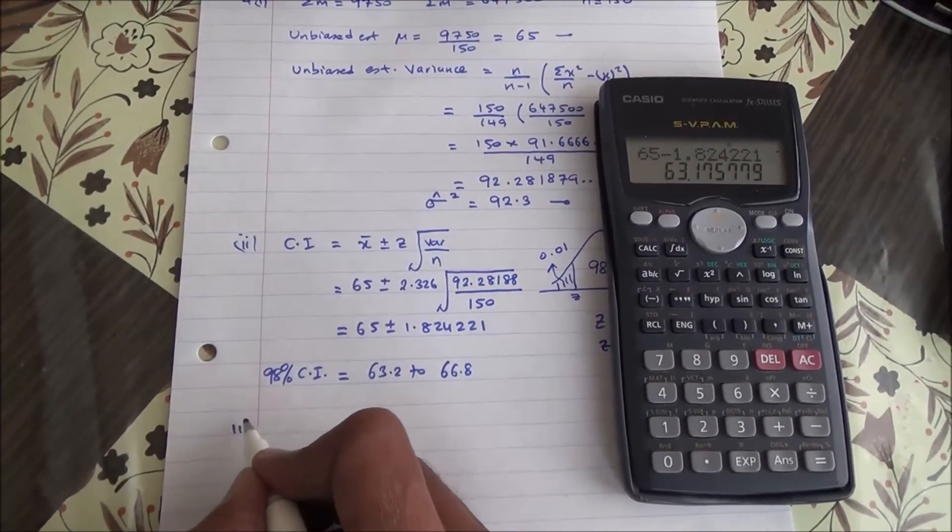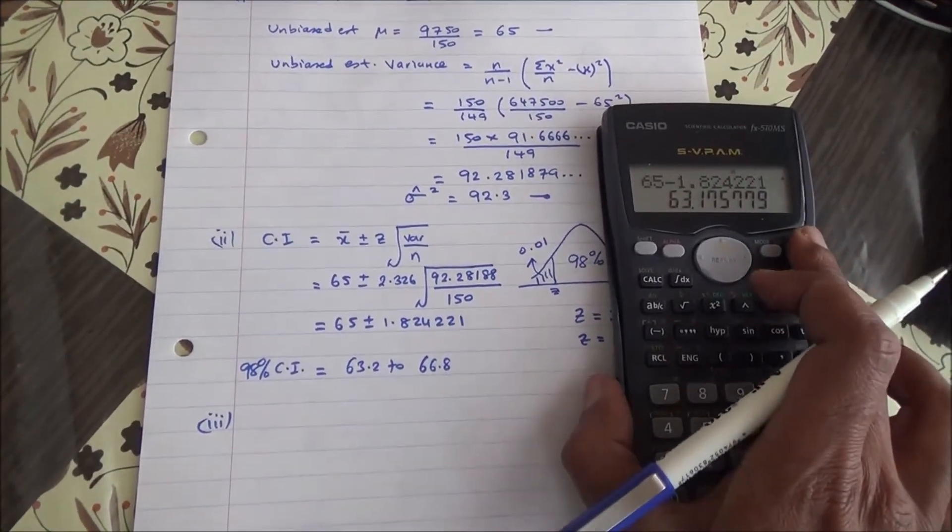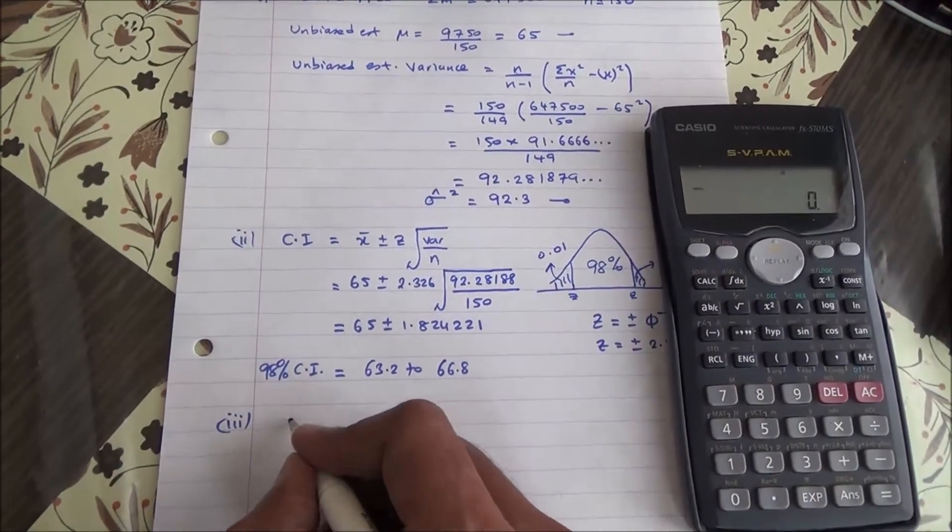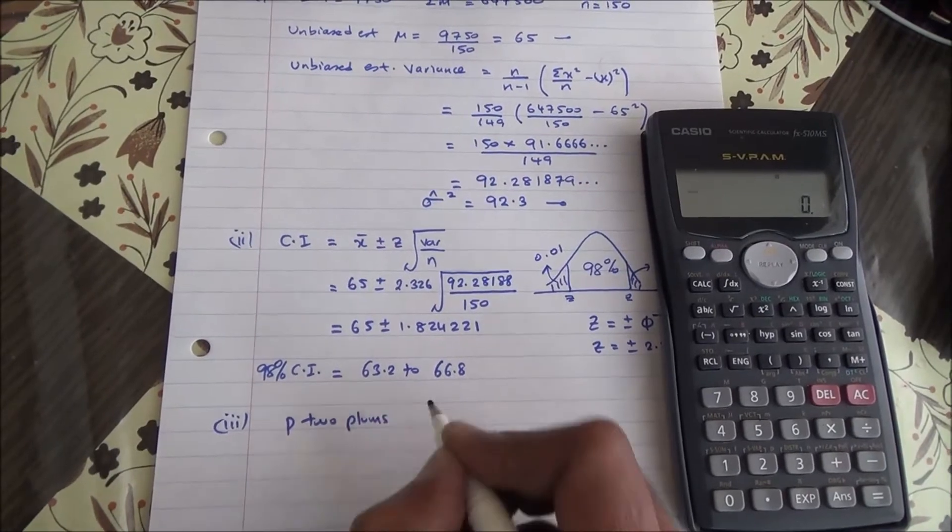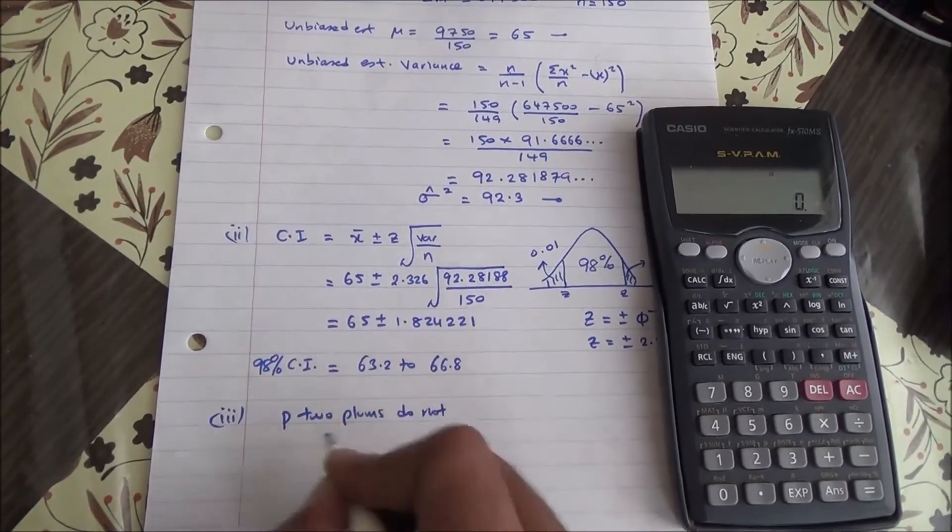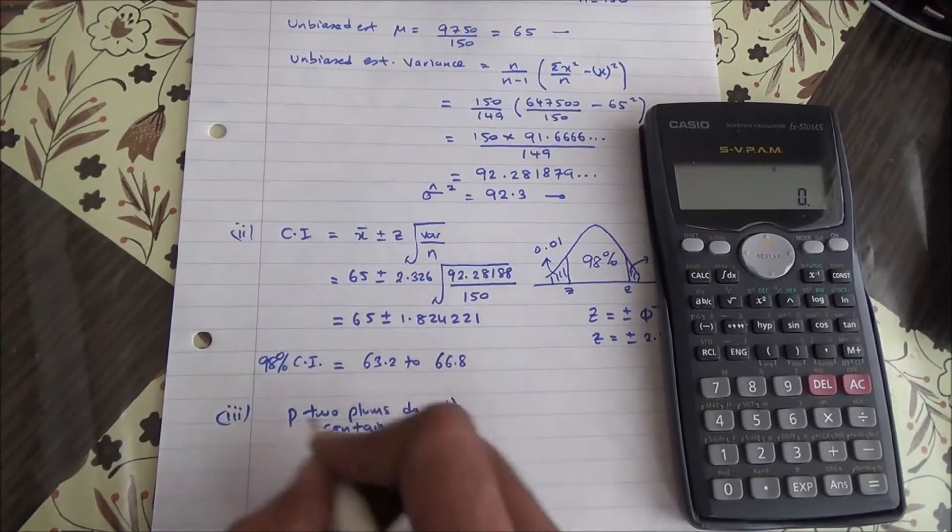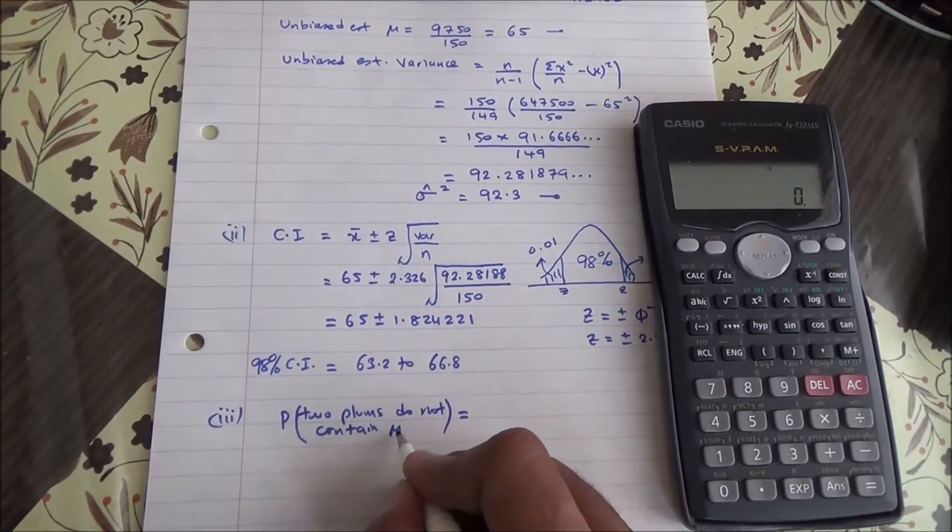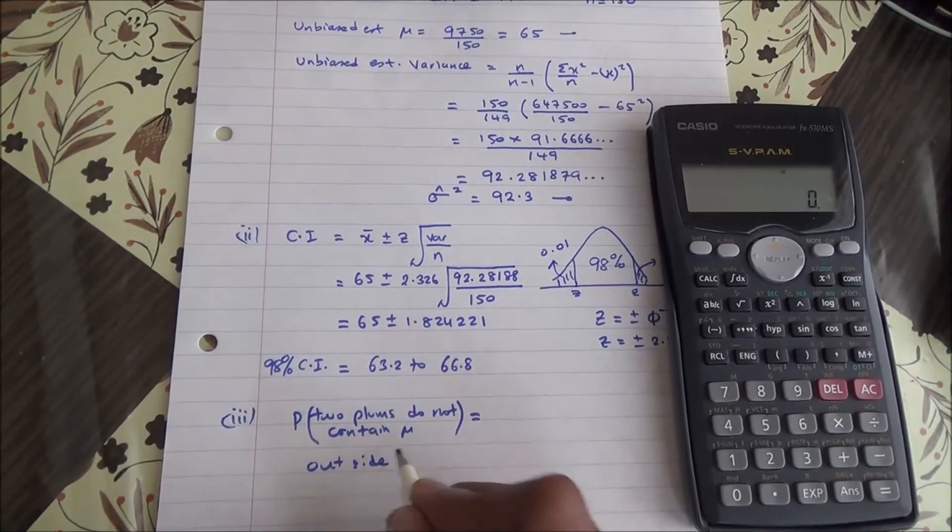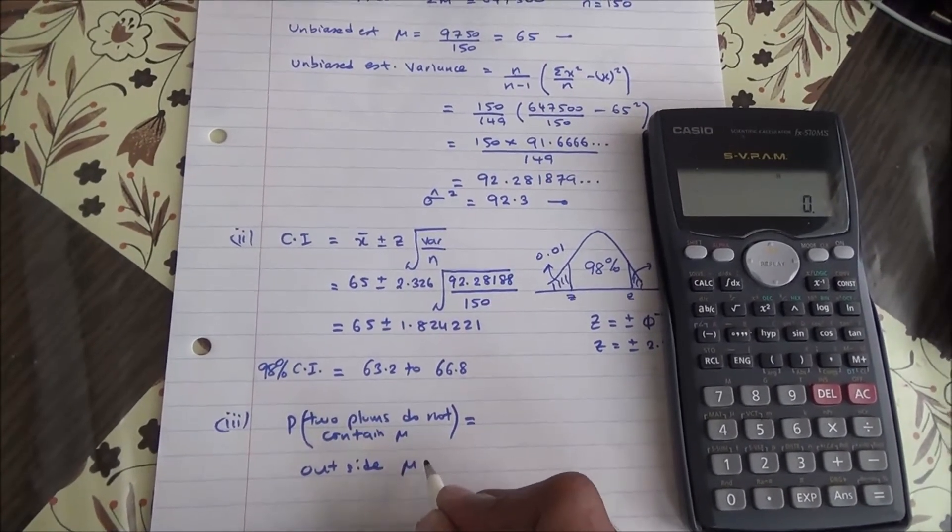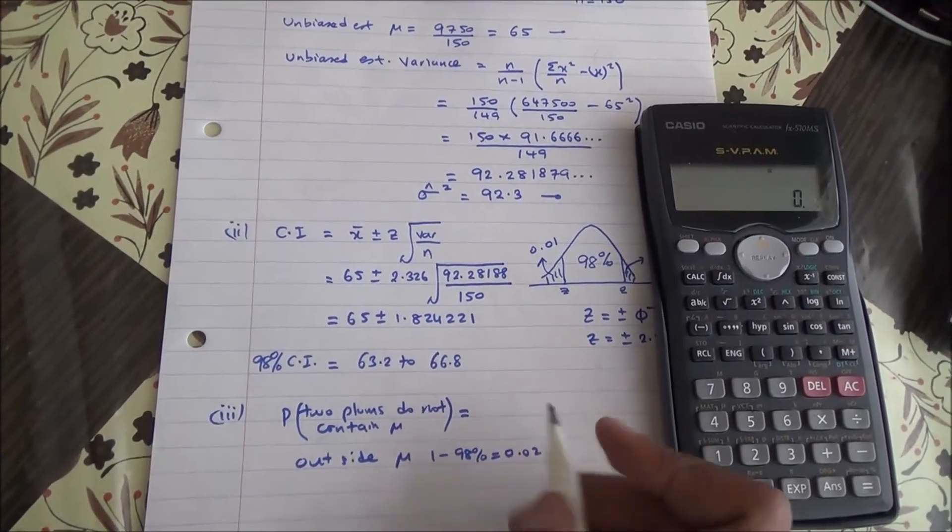For the last part, we were told that two plums were taken, and we need to find the probability that the two intervals do not contain the mean mu. Remember, the mean has a 98% confidence interval. So outside, that means outside mu, we're going to get 1 minus 98%, which is 0.02, and we've got two of those.